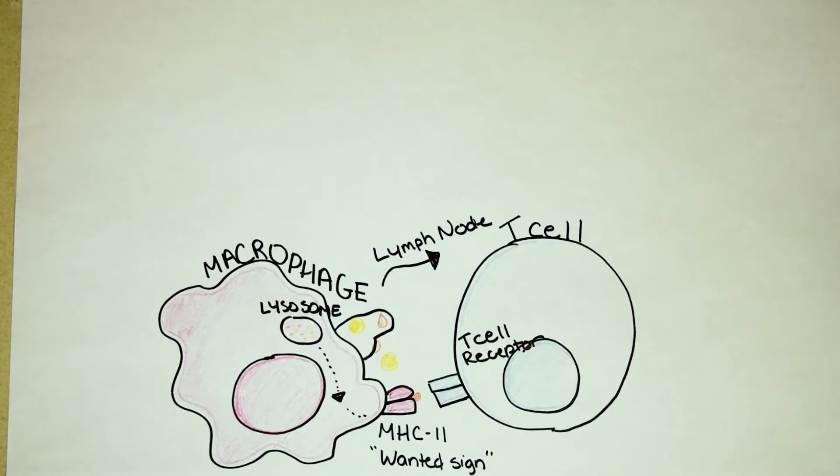The MHC class II wanted sign is step number one. When a T cell makes a memory, it's basically the equivalent of going nuclear. And as you might have seen in the movies, nuclear codes typically need not one, but two keys. And your T cells are very similar. There's a second key. Now, in the absence of the first key, you don't get allergies. Hooray!